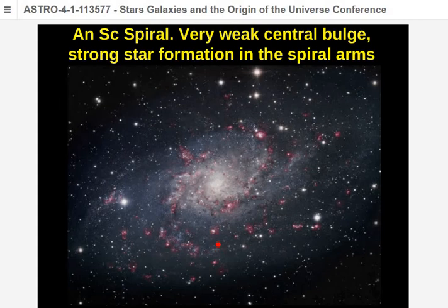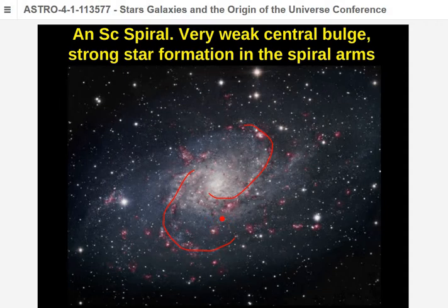In Sc spirals photographed through an H-alpha filter, you can see strings of reddish globs — these are giant Orion-like nebulae, star formation regions where hydrogen gas not yet become stars is lit up by massive blue stars' ultraviolet light. The things that outline spiral arms are: hot massive blue stars, concentrations of emission nebulae, and open star clusters — also places of recent star formation. Open clusters don't live long; they eventually scatter, being loosely and not strongly gravitationally bound.